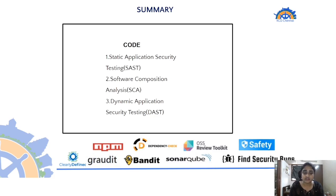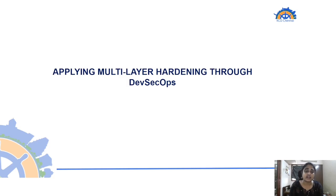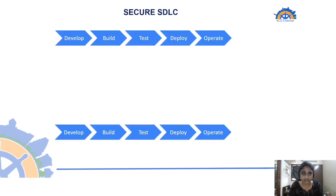Now we have all these layers and we know how to harden each one, but how do we apply it as a whole and consolidate into a single view? That is through DevSecOps. Let's start with an introduction to DevSecOps before going into the reference pipeline that incorporates all the tools we have seen.